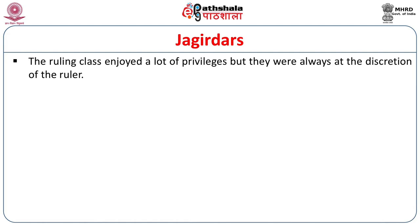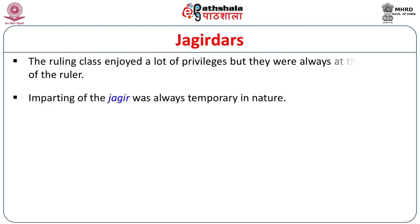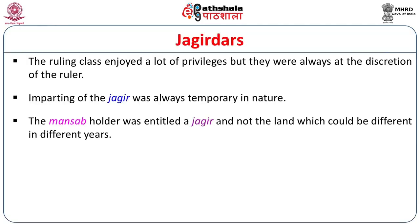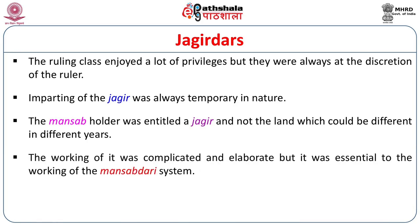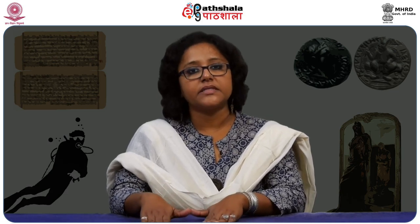Though not technically hereditary, the system tried to become hereditary in most cases. The ruling class enjoyed many privileges, but they were always at the discretion of the ruler. The Jagirs were always assigned temporarily and could be immediately taken away by the ruler. The mansab holder was entitled to a Jagir and not the land itself, which could differ in different years — a mansab holder could be allotted a Jagir in one place one year and then shifted to another Jagir the next.